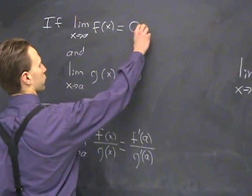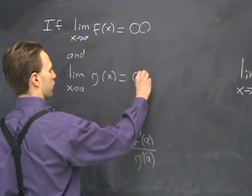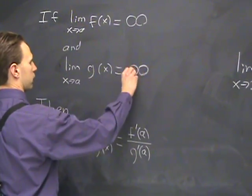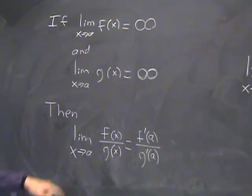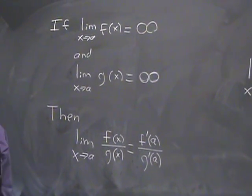Like I said before, this is also true if both limits are infinity, in which case you'd have infinity over infinity instead of 0 over 0.